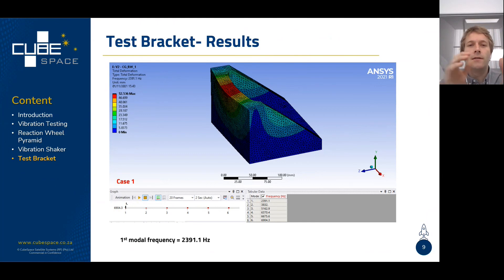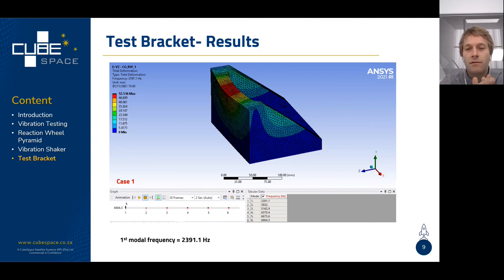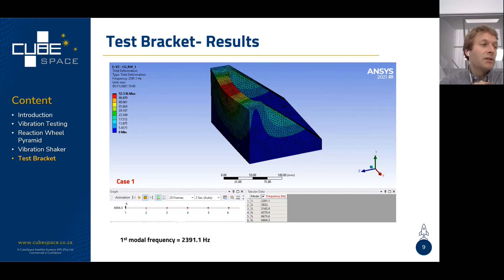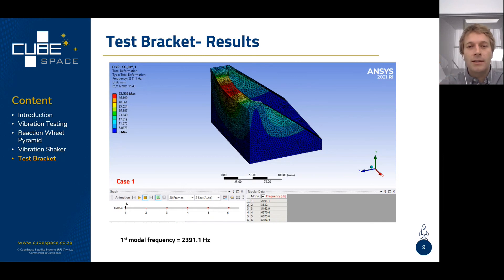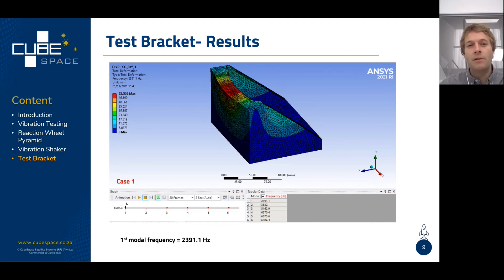We did two test cases. The first has the reaction wheel mounted on the face shown on the left, which is the worst case. As you can see, that unsupported face in the front bends out first in the first modal shape, with a frequency of about 2,400 hertz — which is above our limit of 2,200 hertz. It's beneficial to push that mode as high as possible. In this case, because we wanted one bracket for all three axes, we hollowed out the inside. In general, most test brackets we do are a solid block of aluminum, with large mass to ensure modal frequencies are very high.